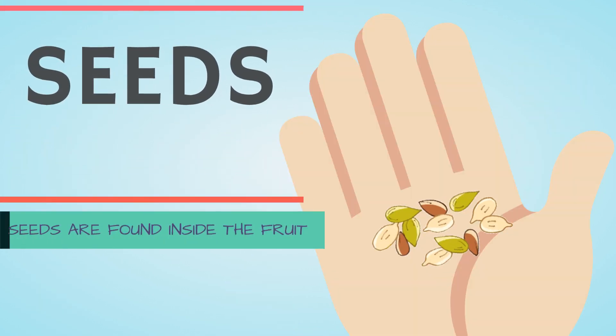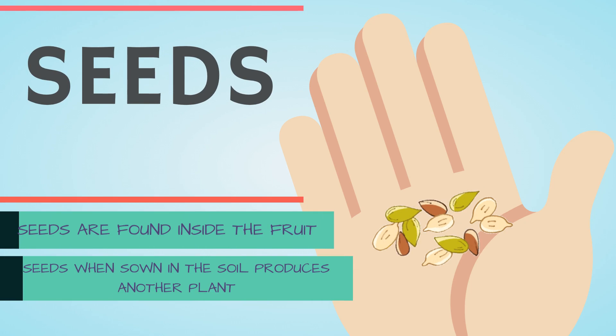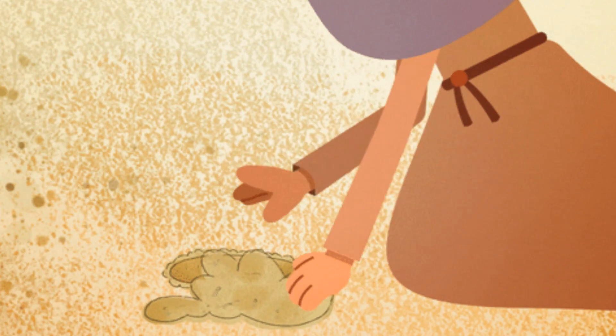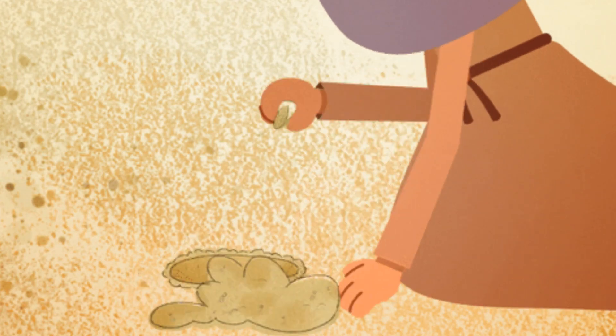These are the seeds. Seeds are generally found inside the fruit. And when these seeds are sown in the soil, it produces another plant called a seedling.